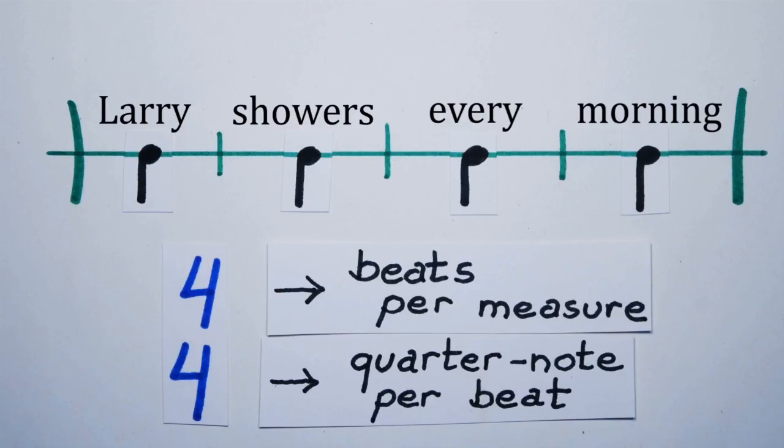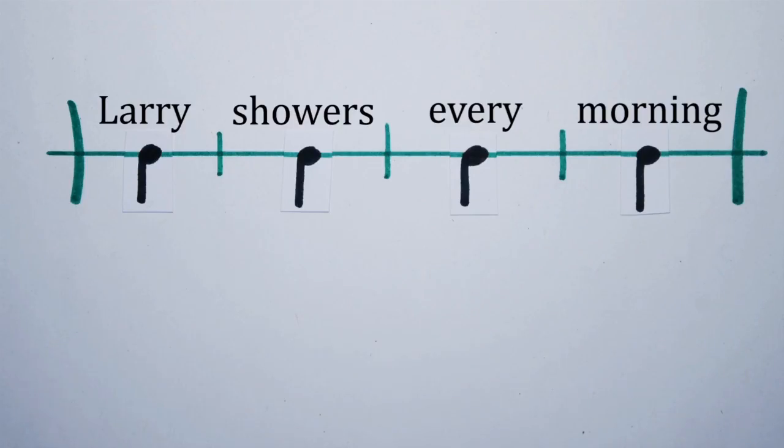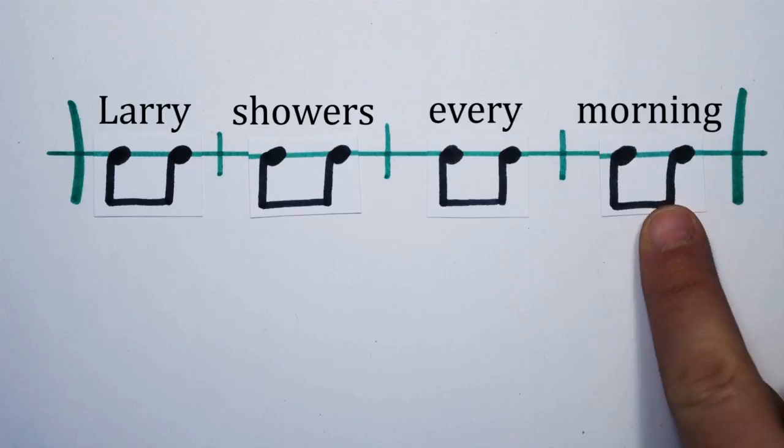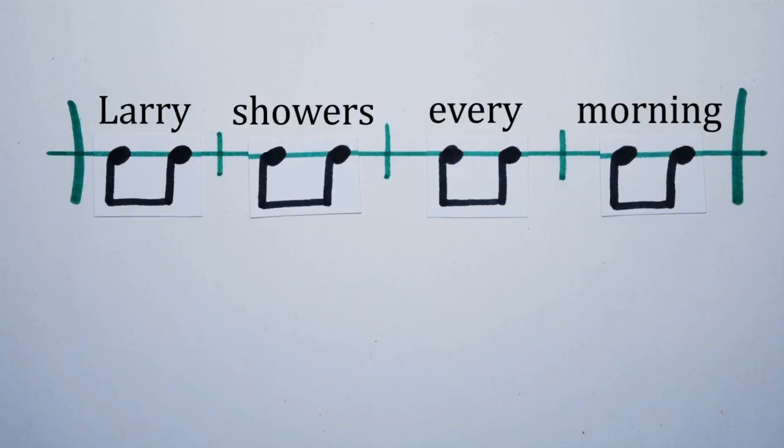If we need to be explicit about the division of beats into pulses, we simply have to split each quarter note into two eighth notes and assign one eighth note to each syllable. Larry showers every morning.